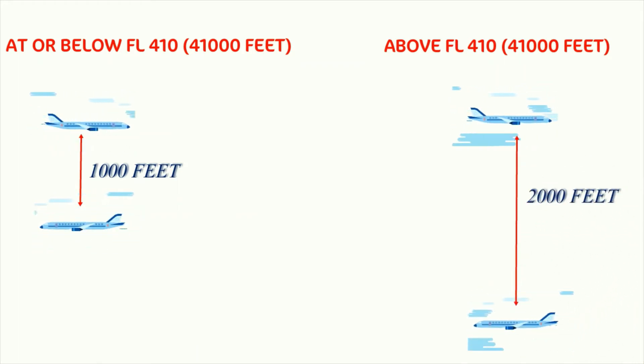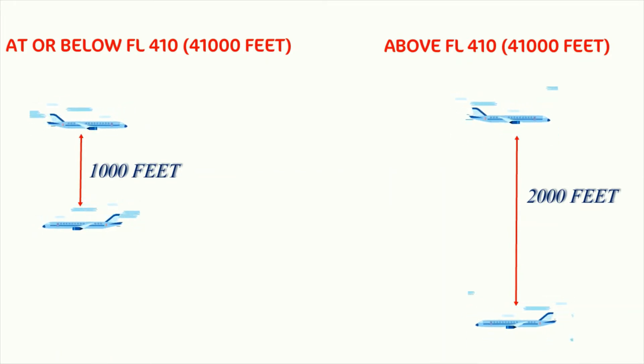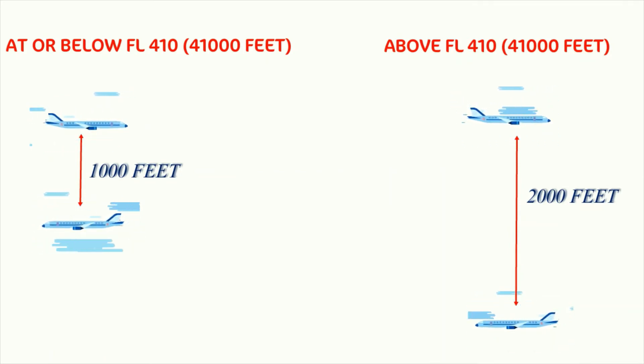This is because the accuracy of measurements reduces as the aircraft goes further away from the ground. It is the responsibility of the air traffic controller to ensure that aircraft fly at altitudes separated by the set minimum vertical separation.